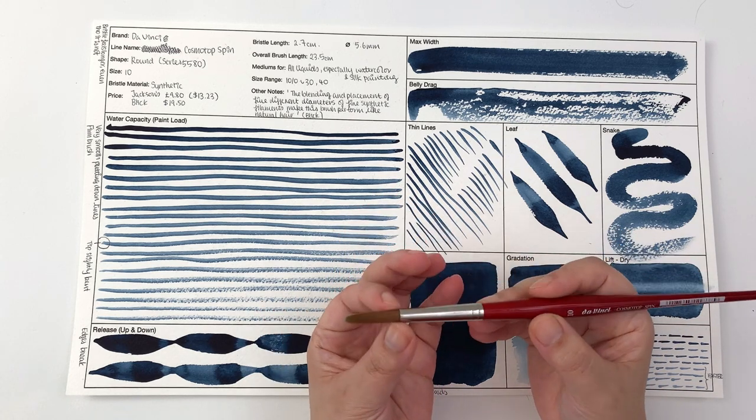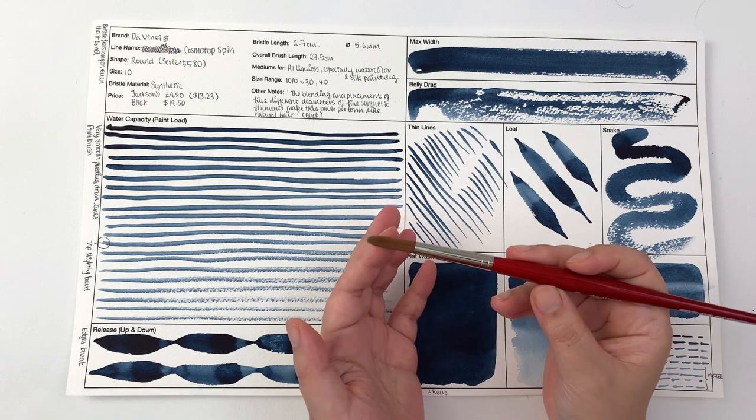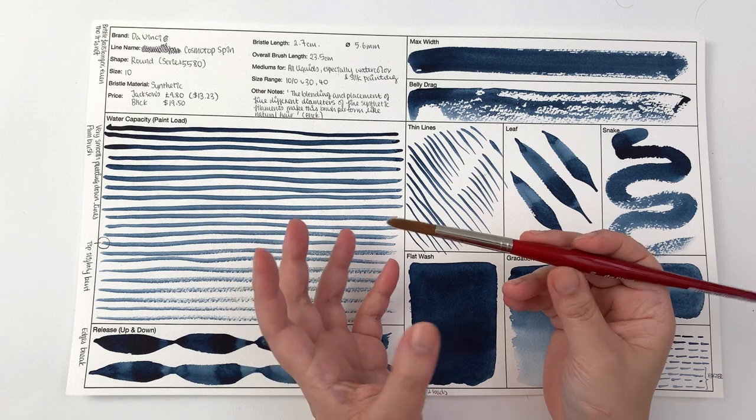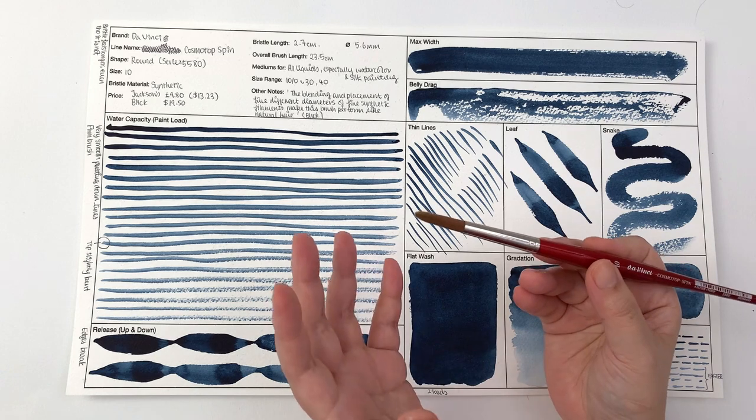Whereas most normal size 10 brushes come at about 6-point-something millimeter for the diameter, so because it's a little bit thinner it does feel like the bristle is longer for some reason. That is something to look out for; it's definitely something I noticed while I was painting with this brush.